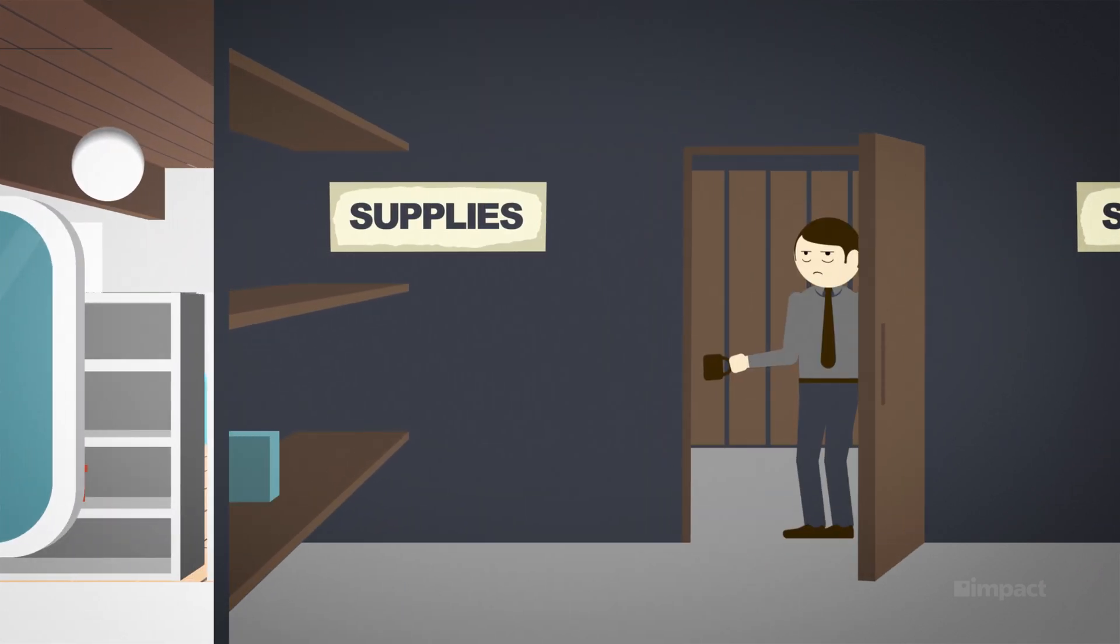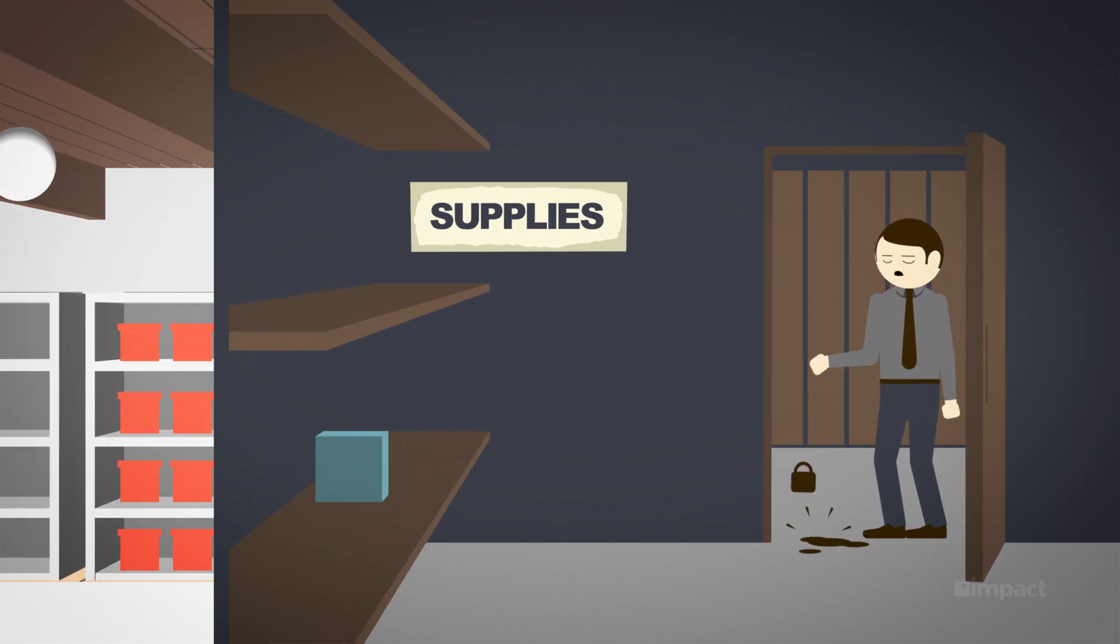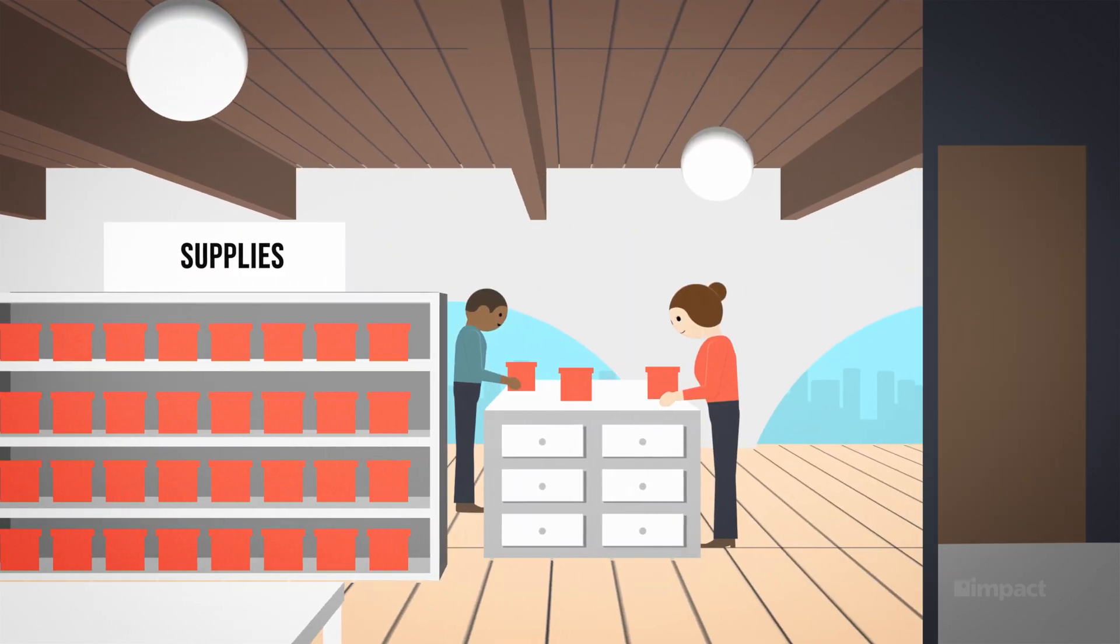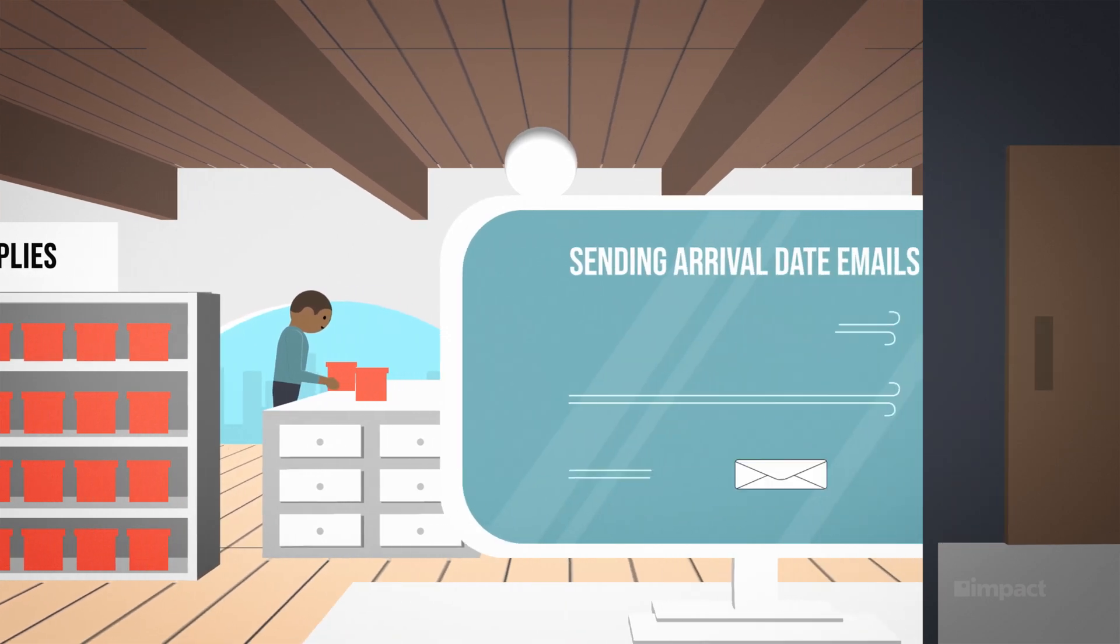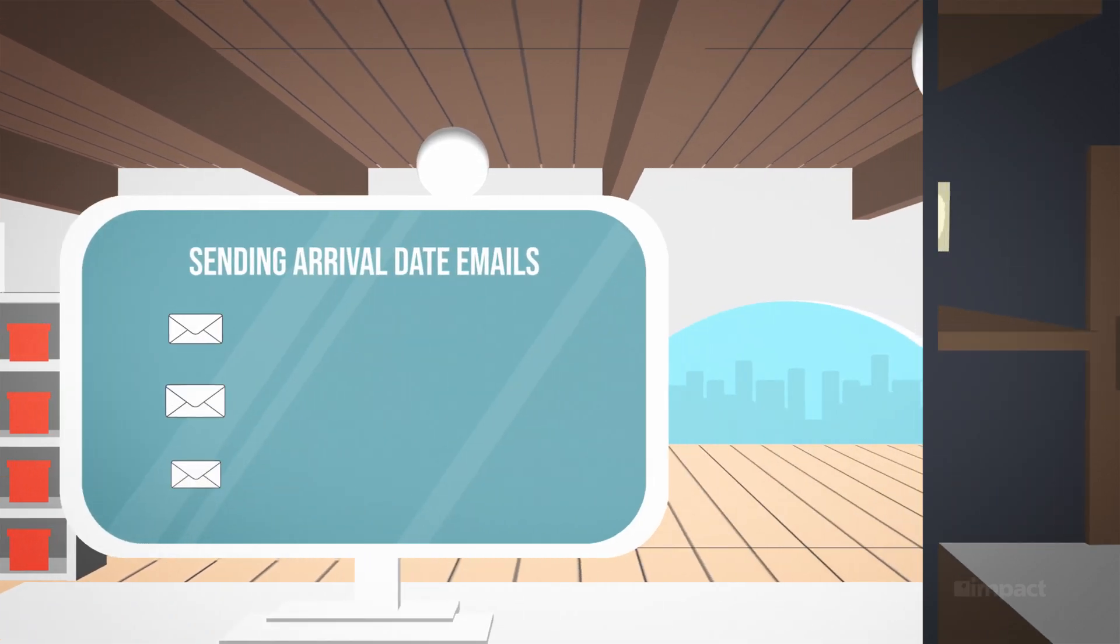But at Old Corp., another employee only just realized they're almost out. Newink's order is in production, and among their smart manufacturing benefits are automated emails to customers with expected arrival dates.